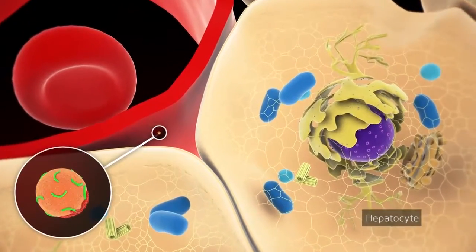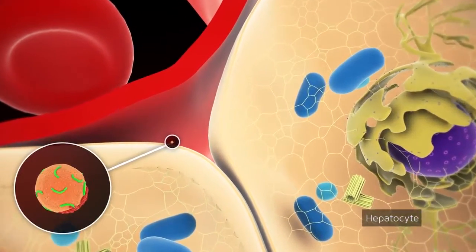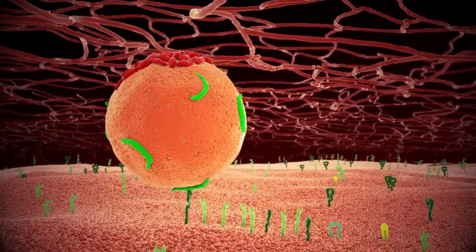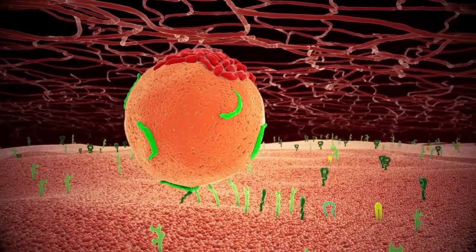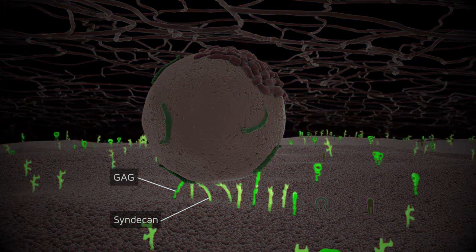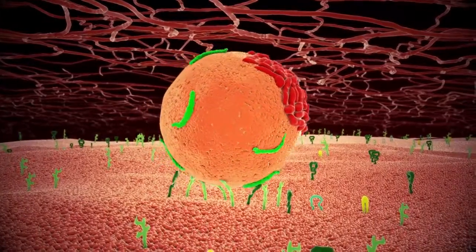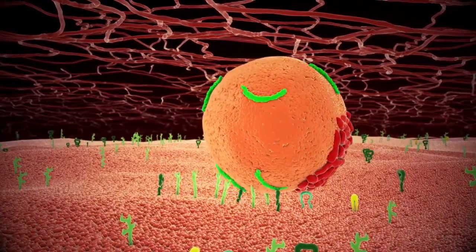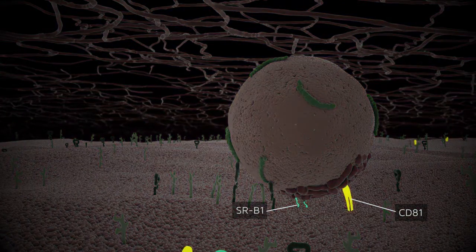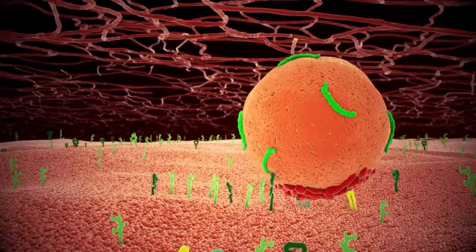Once the viral particle reaches the hepatocyte surface, it interacts first with glycosaminoglycans and syndecans, followed by binding to more specific receptors, including the scavenger receptor B1 and the tetraspanin protein CD81.